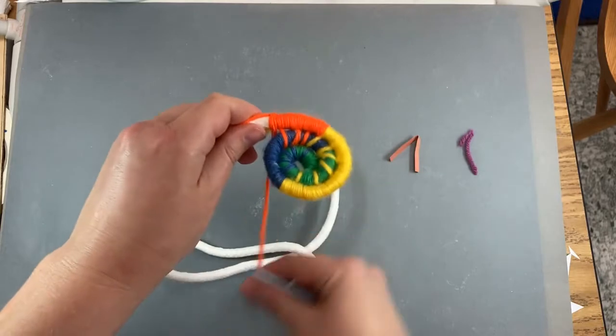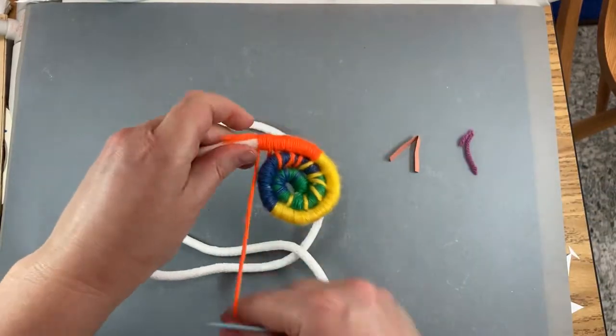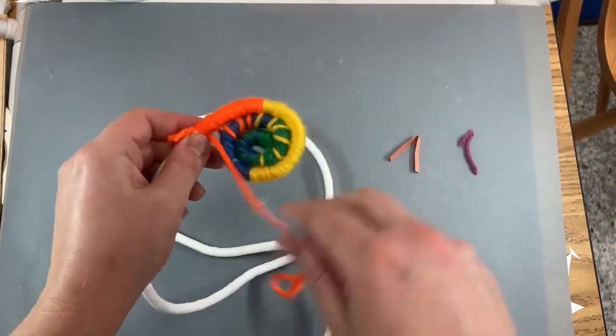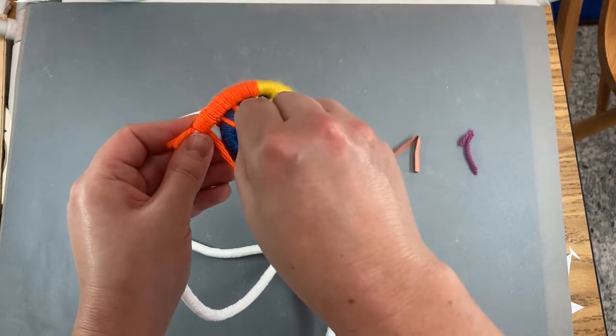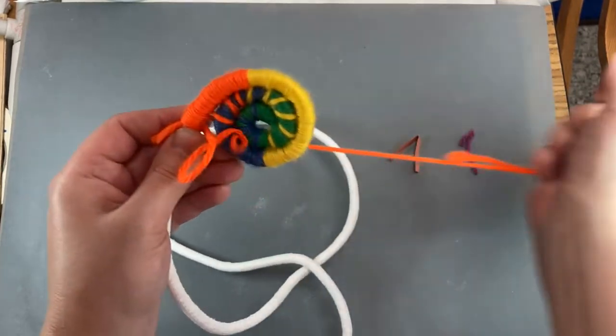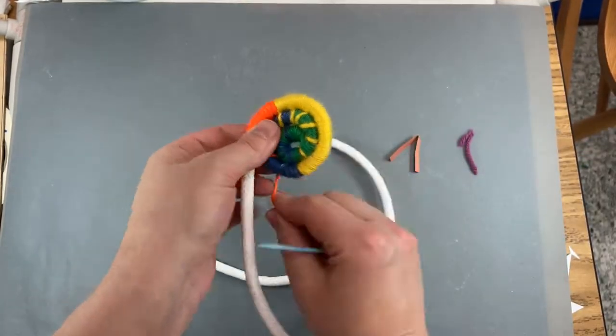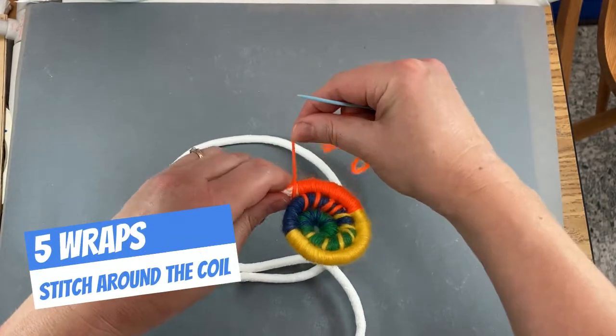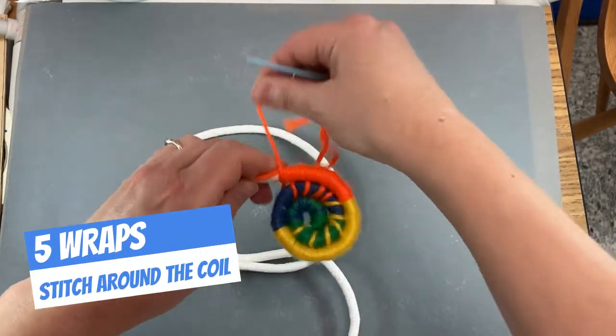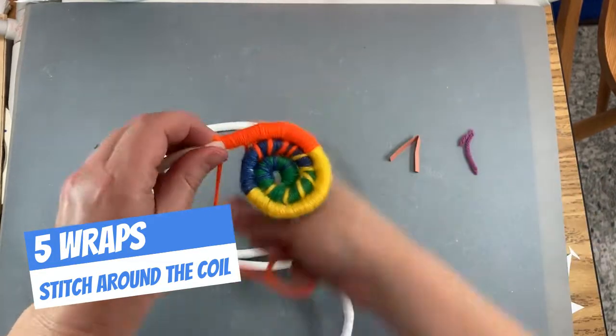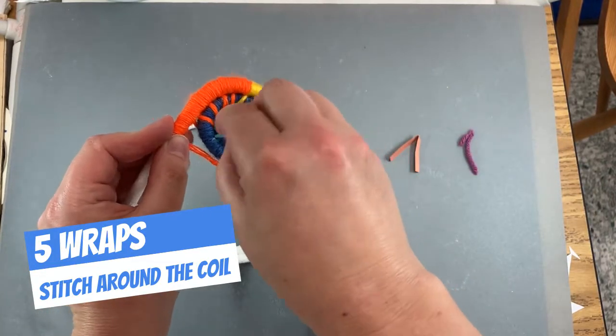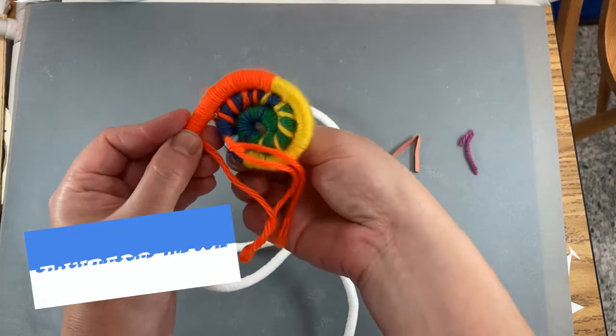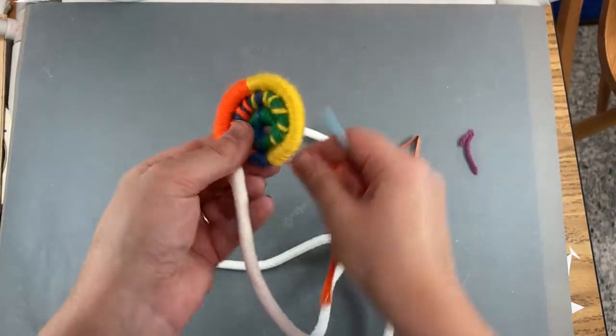One, two, three, four, five around the coil, make a stitch and tighten it up. One, two, three, four, five around the coil, make a stitch and tighten it up.